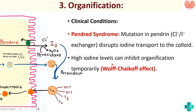Another concept is the Wolff-Chaikoff effect. If there are high iodine levels, it can inhibit organification temporarily. The body does not want more thyroid hormone produced than necessary. So even if a lot of iodine enters the thyroid follicular cell, by the Wolff-Chaikoff effect, thyroid hormone synthesis can be temporarily stopped.